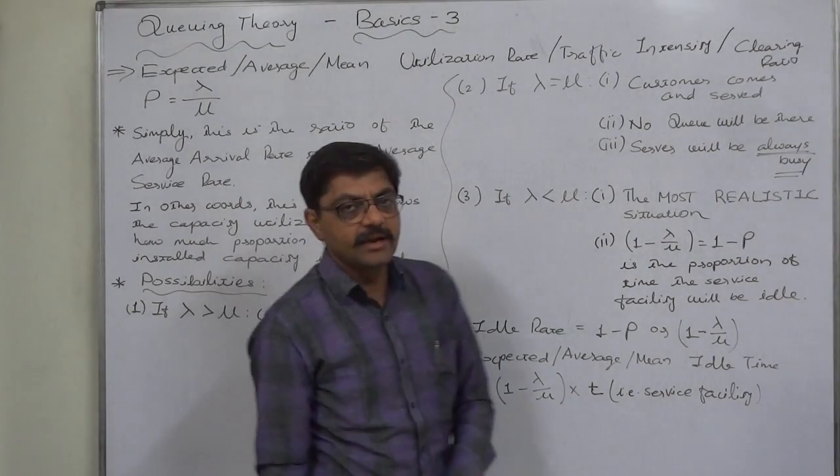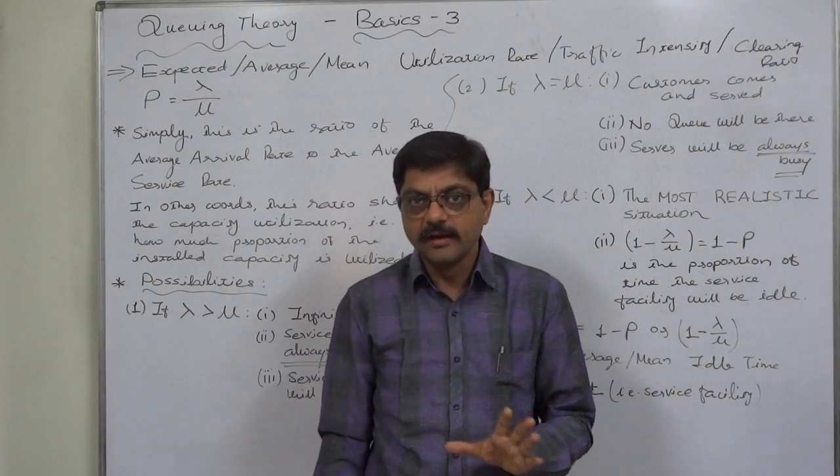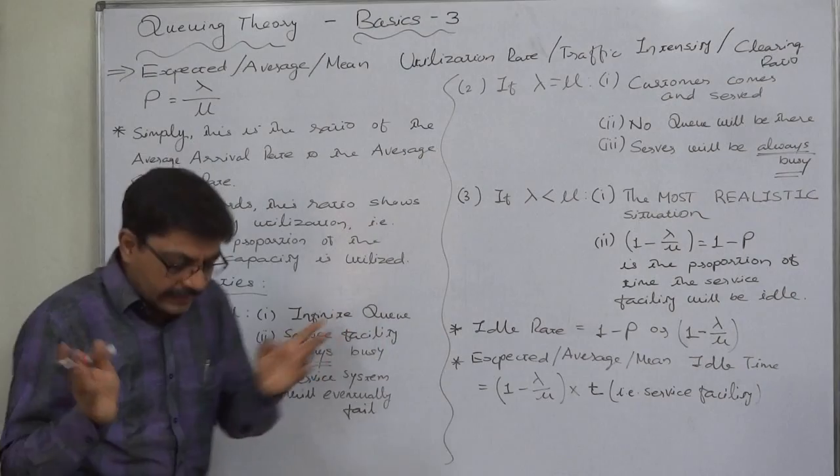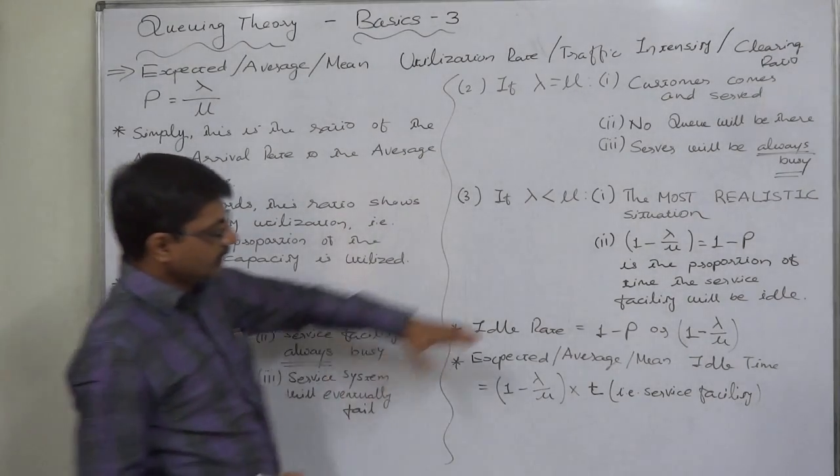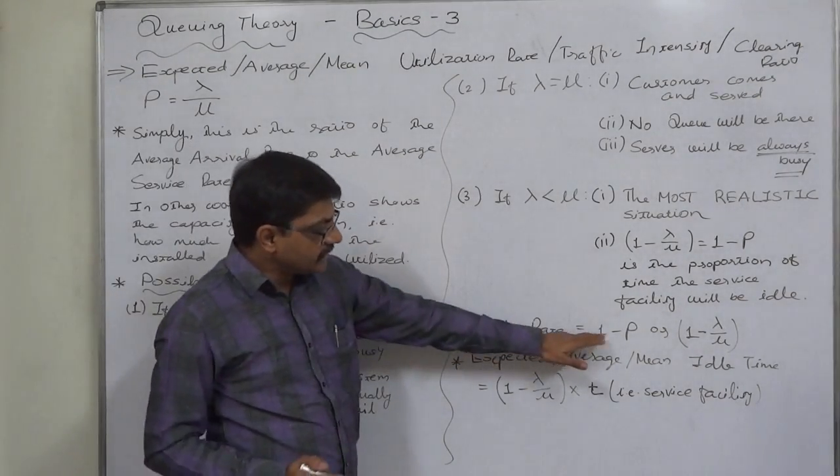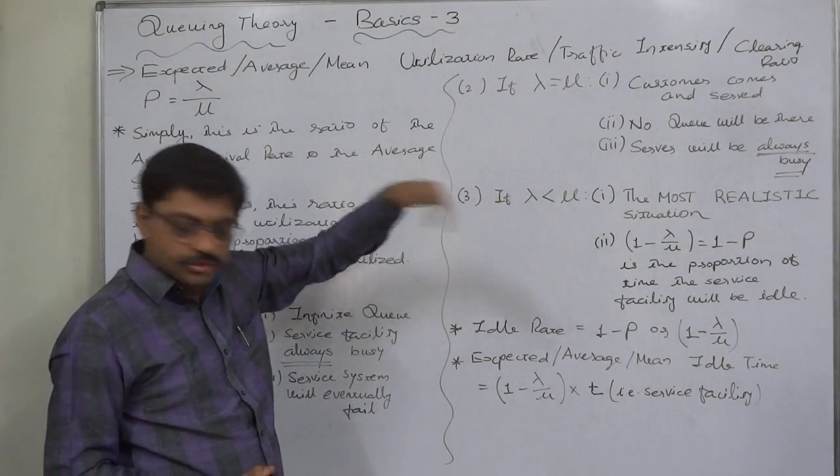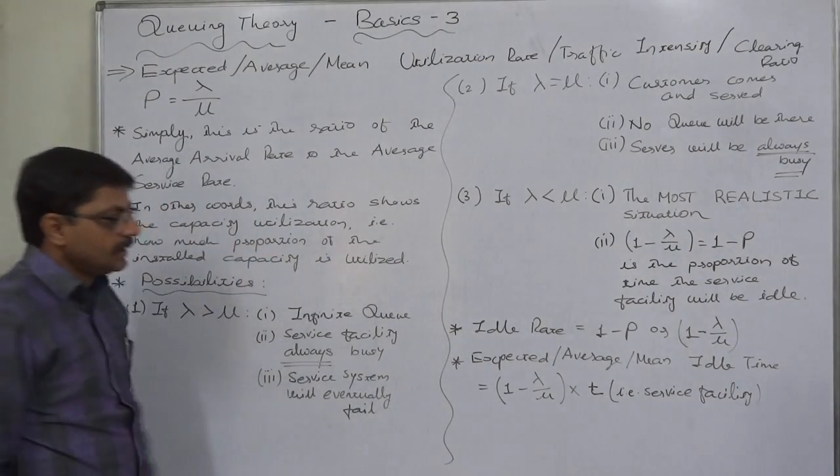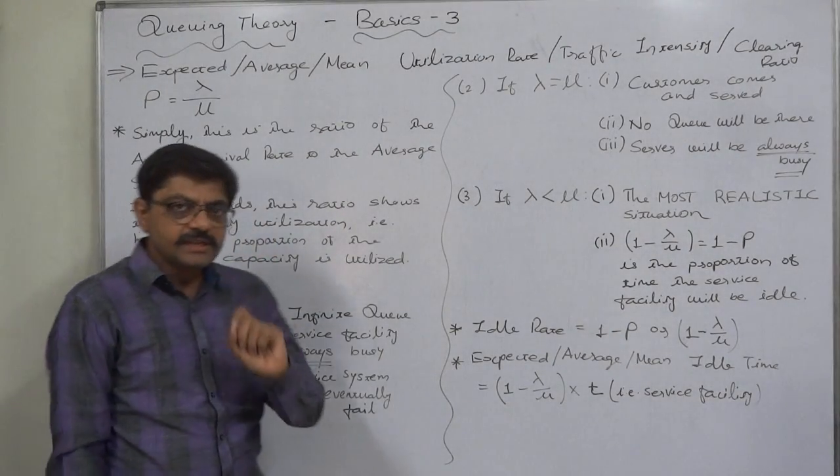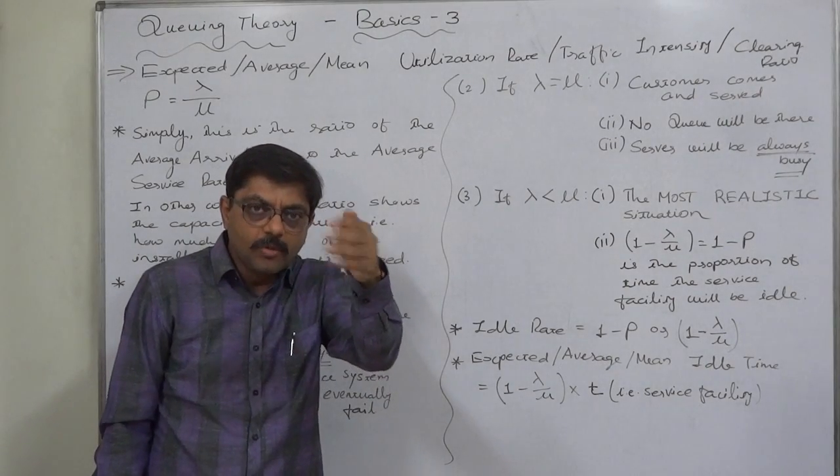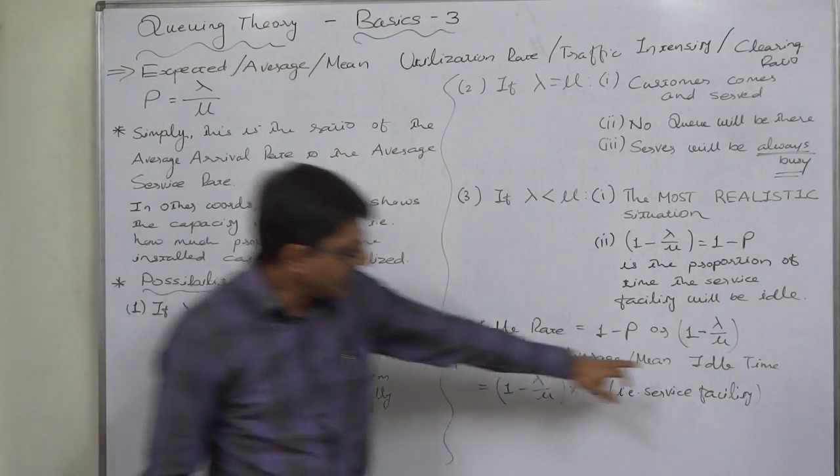Exactly this cannot happen at the end of every hour, but this is the long term average of calculations. So now we can say that the idle rate is 1 minus utilization rate or capacity ratio or whatever name you use.